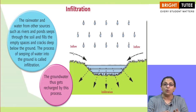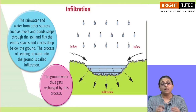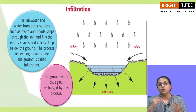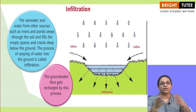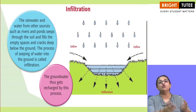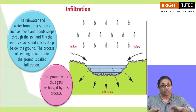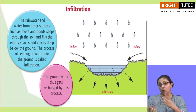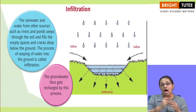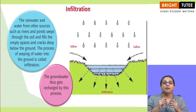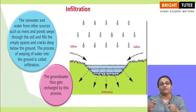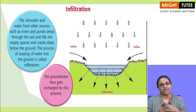The groundwater gets recharged by this process. For example, if we are using groundwater — suppose in a field there is a tube well or a hand pump installed — the groundwater is being used, but it gets replenished because of the process of infiltration. That is how the groundwater level is maintained.